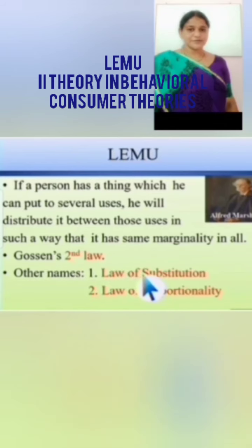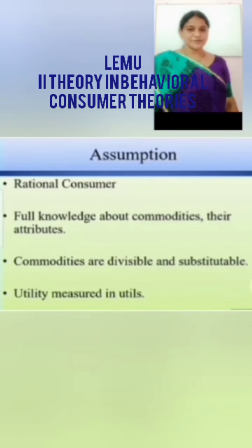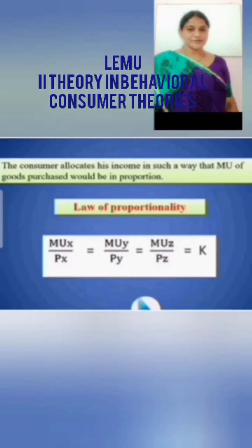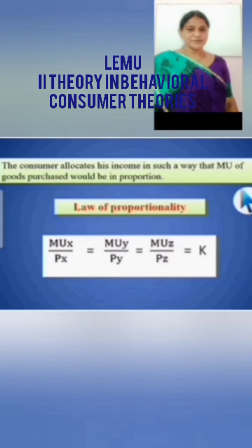What assumptions are taken here? First, rational consumer — the consumer should know what he has to buy and how useful it is. Full knowledge about commodities and their attributes is required. Commodities are divisible and substitutable. Utility is measured in utils. The consumer allocates his income in such a way that the marginal utility of goods purchased would be in proportion.